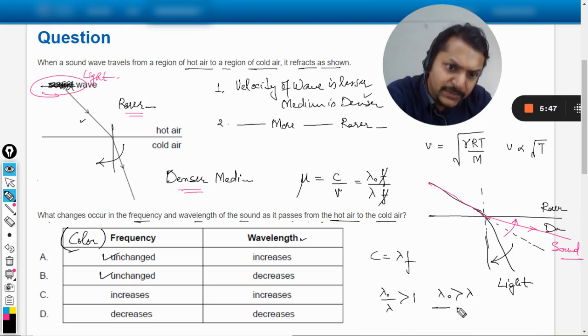And f and f gets cancelled out because frequency is unchanged. And thereby I can say that if μ is greater than one, so λ₀/λ is greater than one, λ₀ is greater than λ. It means the wavelength will reduce and hence the answer should be B.